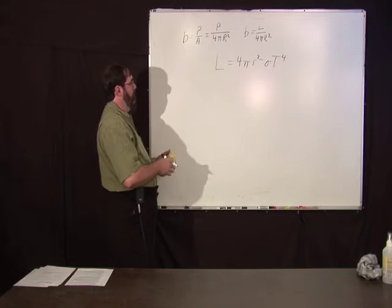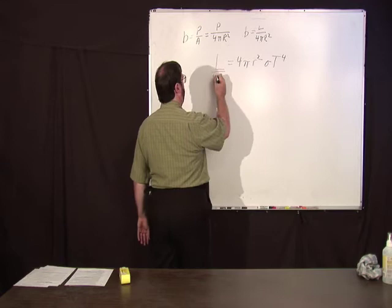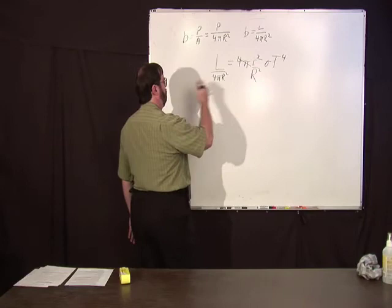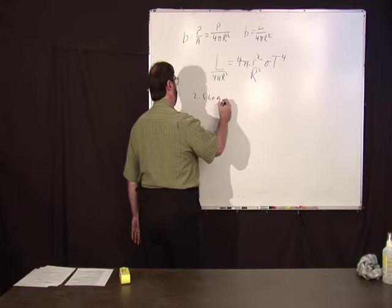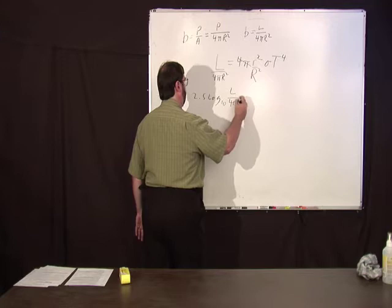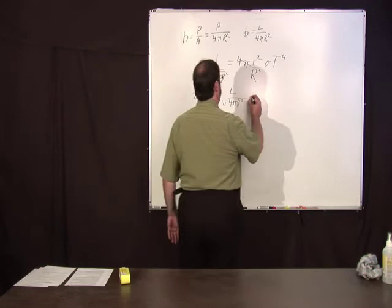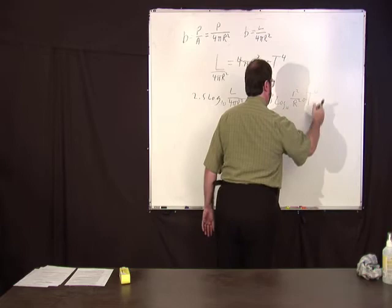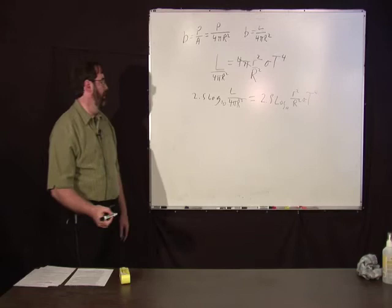Well, you could, with this equation here, divide both by 4 pi r squared. So that would just cancel that and we'd have an r squared here. And then take 2.5 log of that. That's going to equal 2.5 log 10 of r squared over r squared sigma t to the fourth.